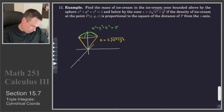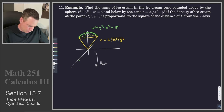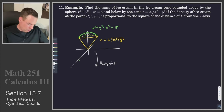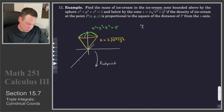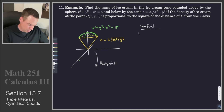Now if we think about what we would get for a footprint, this depends on which direction we're going to integrate with respect to first. We are working in cylindrical coordinates so we're going to go z first, and now we can answer the four questions about the region.